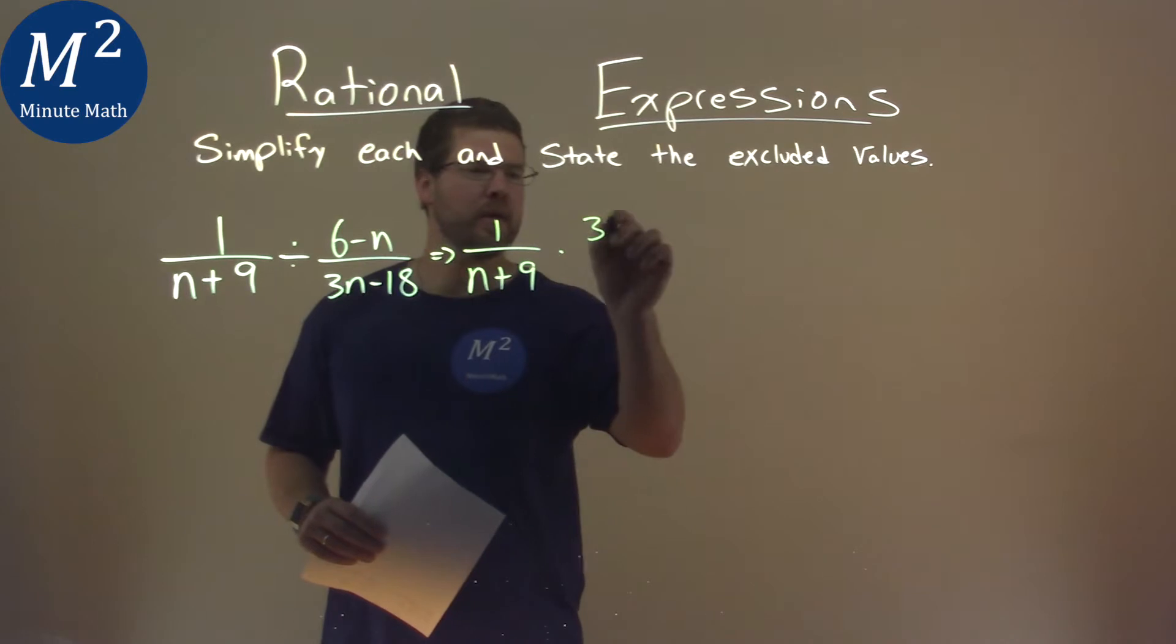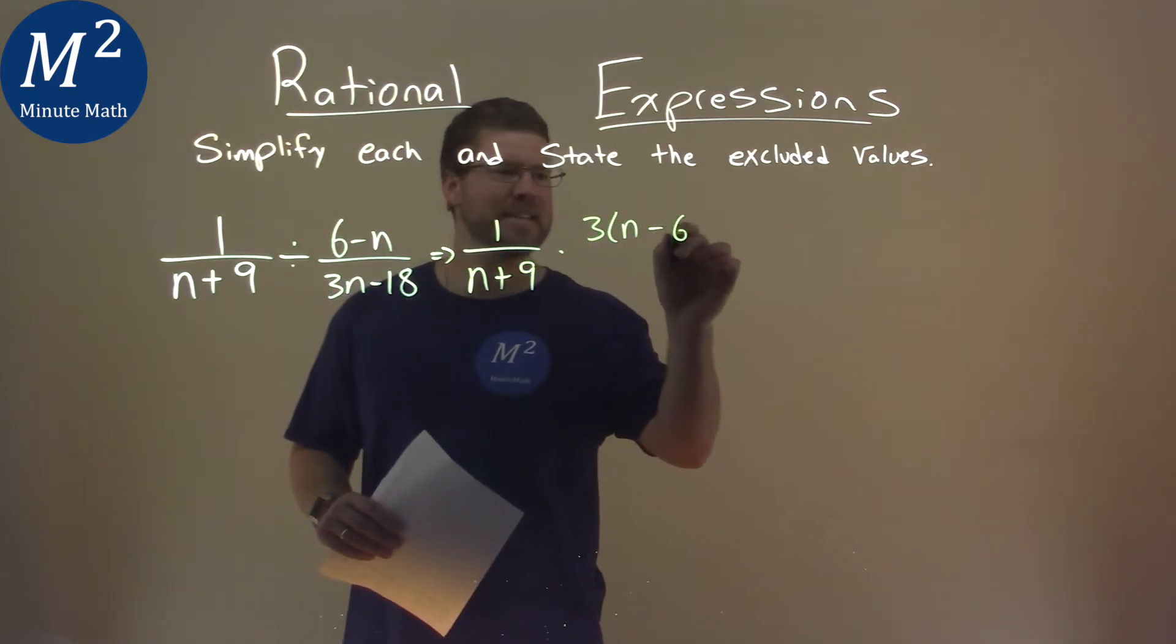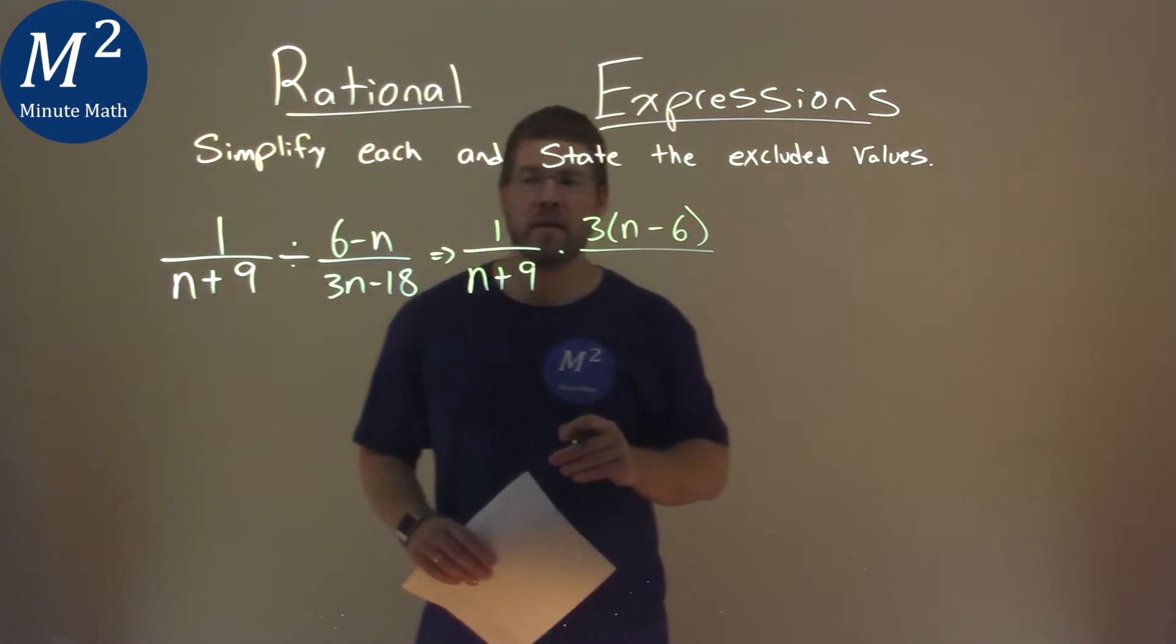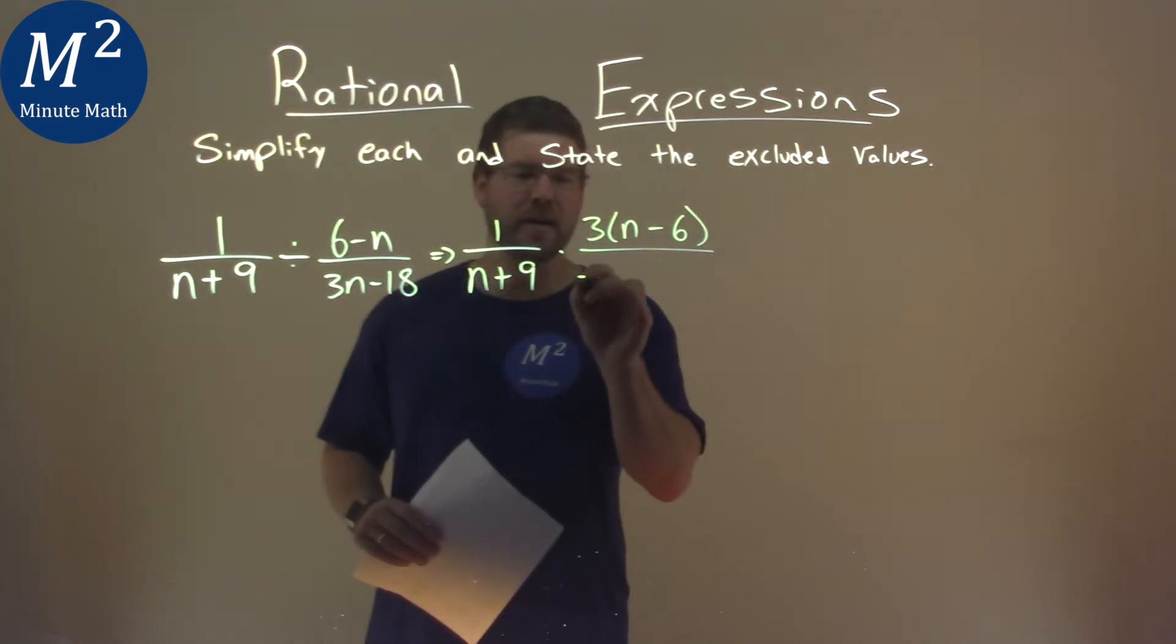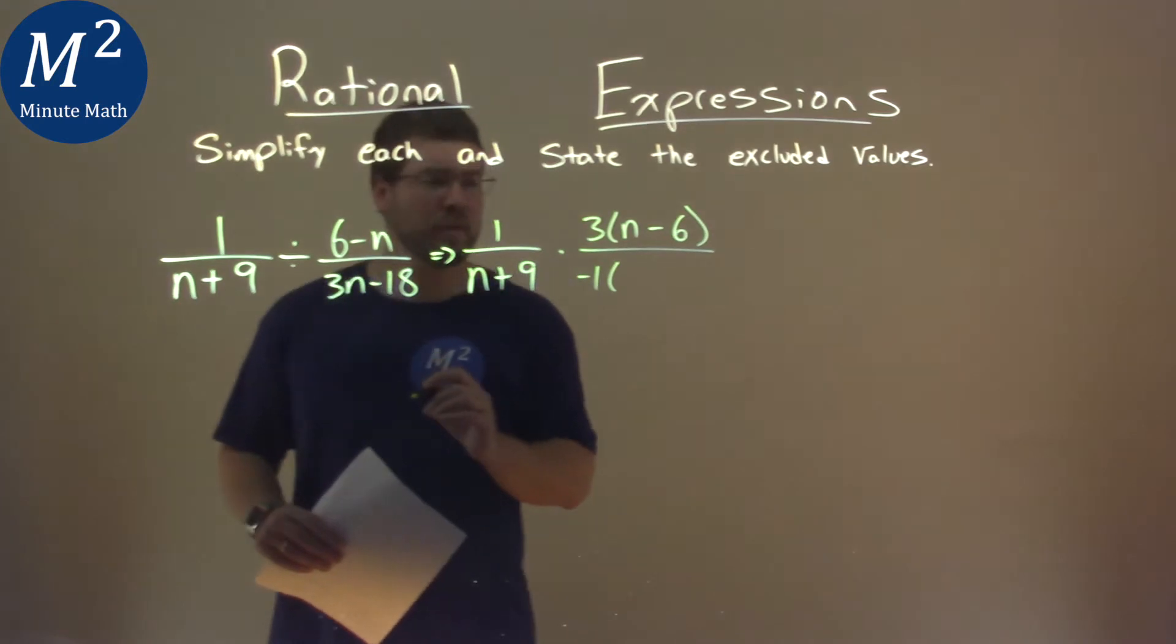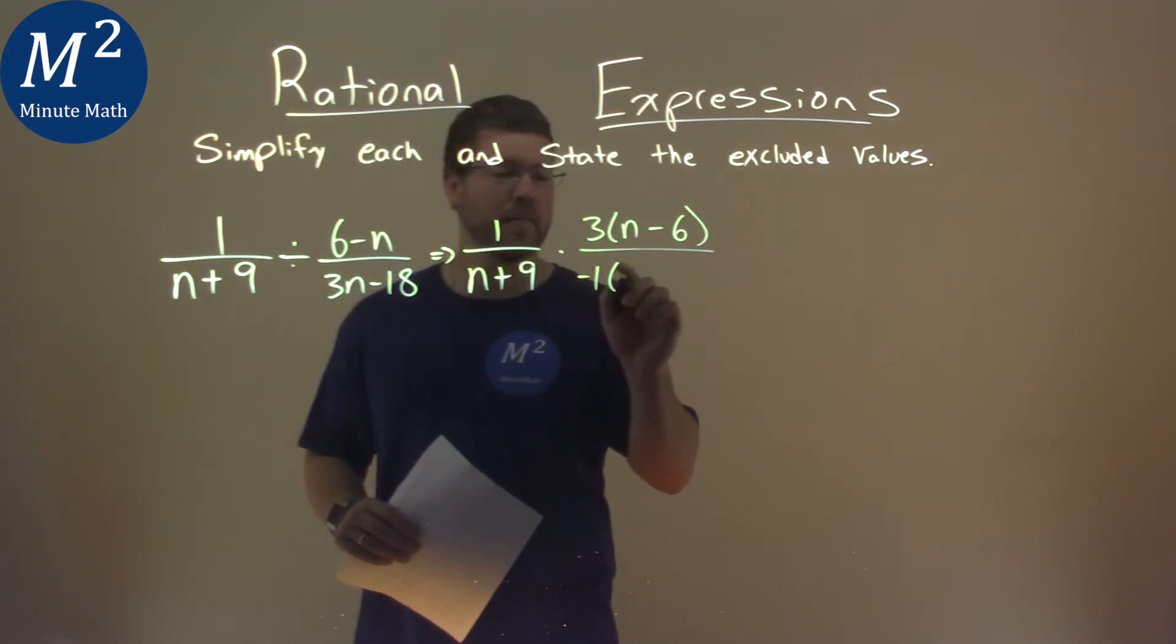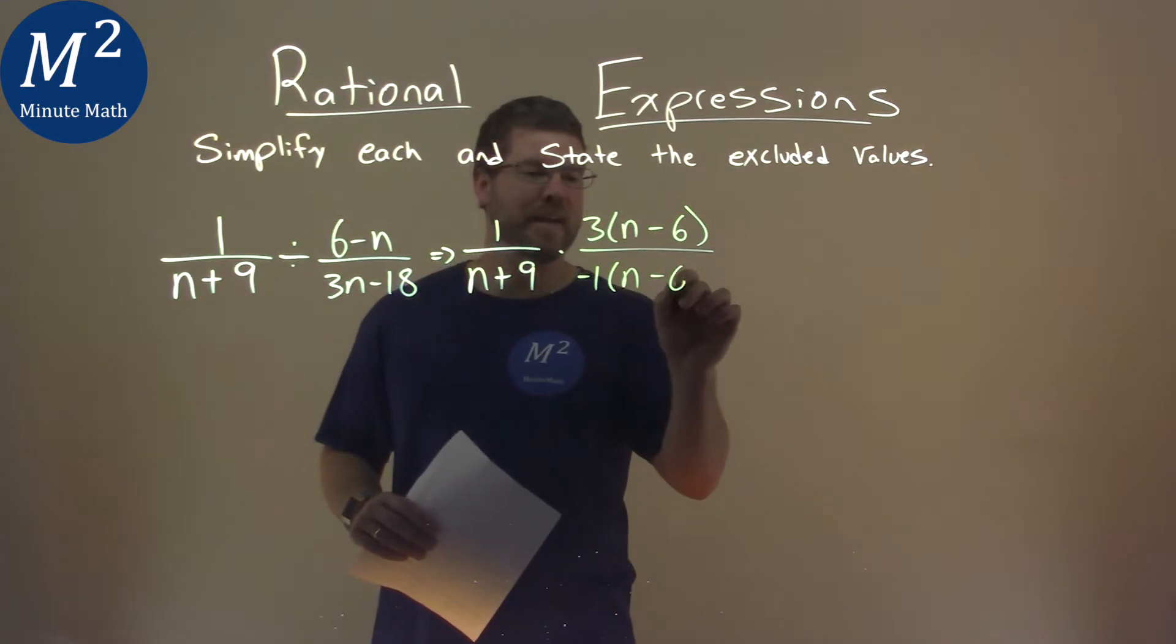So I pull out the 3, I'm left with n minus 6. The denominator is 6 minus n, but I'm going to be smart here and I'm going to pull out a negative 1, and in doing so this becomes... so this 6 minus n by pulling a negative 1 is n minus 6.